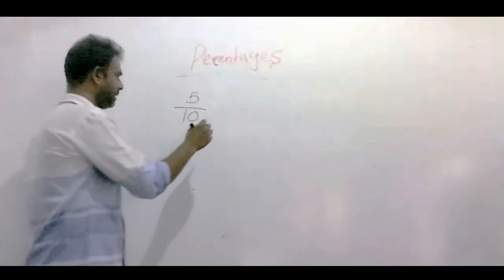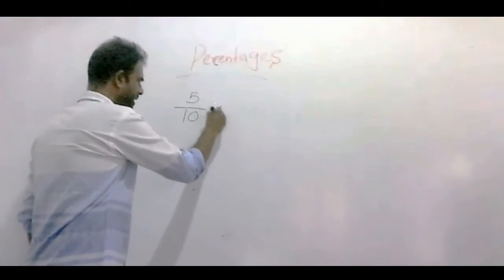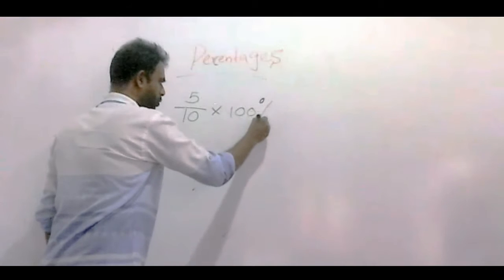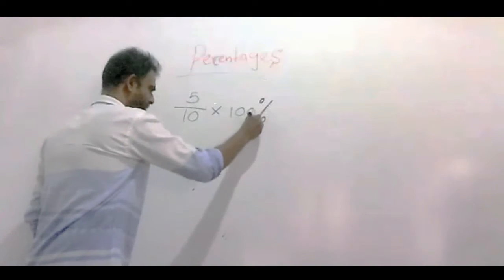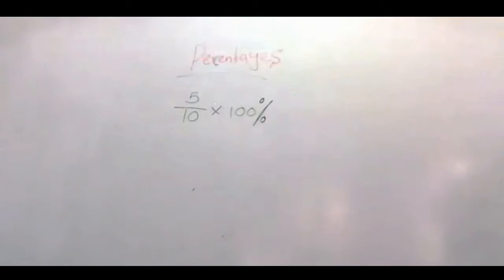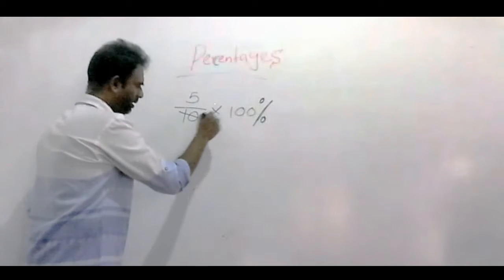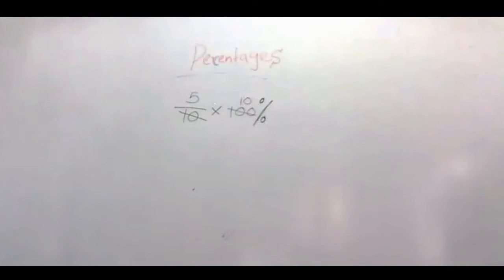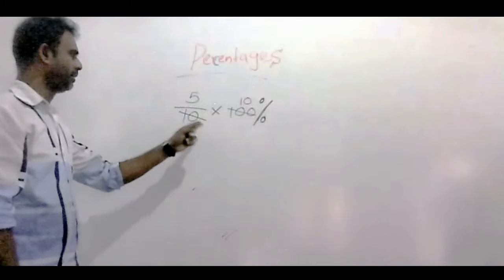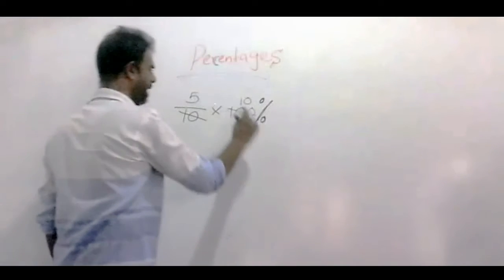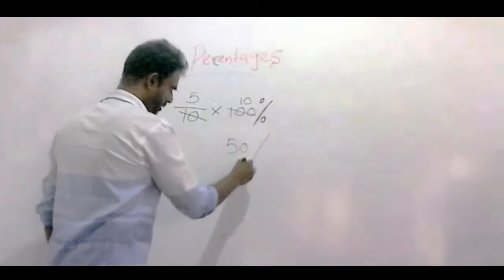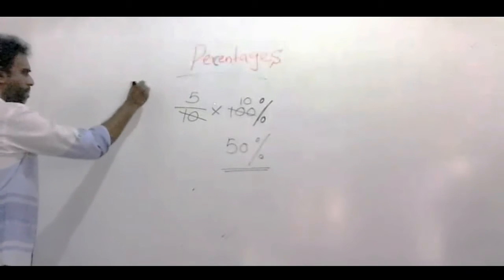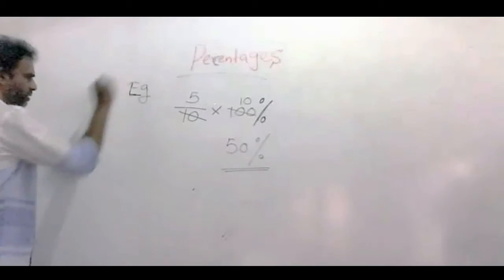The first method: we multiply this fraction by 100. You know that we use the percent symbol to represent percentage. So 10 divided by 5, multiplied by 100: 100 can divide by 10, giving 10 into 10 which is 100, and 5 into 10 is 50. The percentage is 50%.